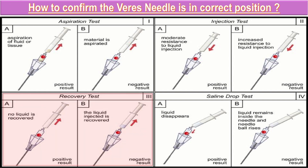To confirm the Veress needle is in correct position: first, the recovery test — open the valve and observe for flow of blood; no fluid is recovered in a positive result. Second, the aspiration test — put 5ml of normal saline in a syringe, push it into the Veress needle, and suck it back. Third, the hanging drop or saline drop test — a drop is placed which should be sucked in due to negative pressure. Fourth, the injection test — moderate resistance to liquid injection is a positive result; increased resistance is a negative result. Other tests include lifting the abdominal wall and listening for a hissing sound, and two audible clicks heard as the layers of the umbilicus are penetrated.